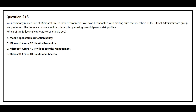Question number 218. Your company makes use of Microsoft 365 in their environment. You have been tasked with making sure that members of the global administrator group are protected. The feature you use should achieve this by making use of dynamic risk profiles. Option A: mobile application protection policy. Option B: Microsoft Azure AD Identity Protection. Option C: Microsoft Azure AD Privileged Identity Management. Option D: Microsoft Azure AD Conditional Access. The correct answer is Option D, Microsoft Azure AD Conditional Access.